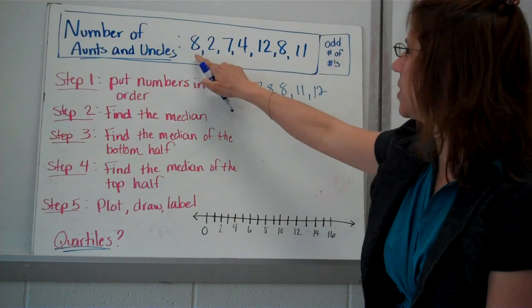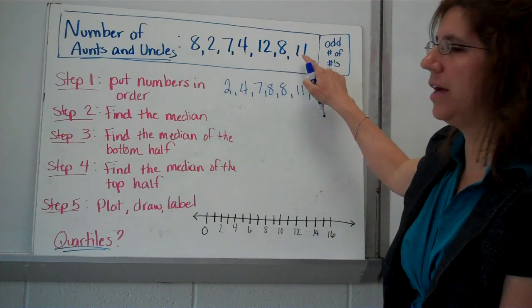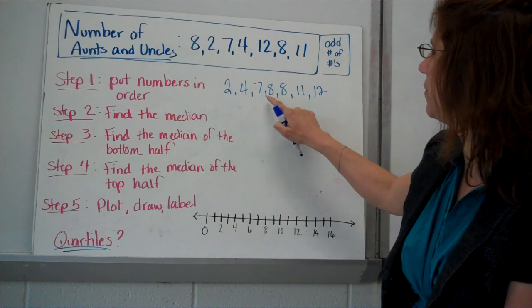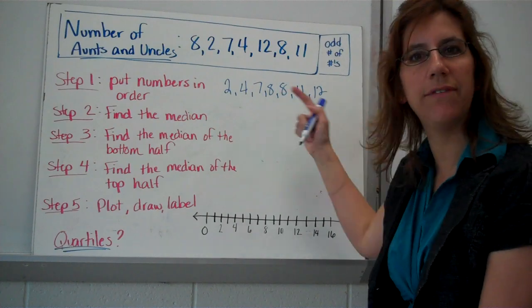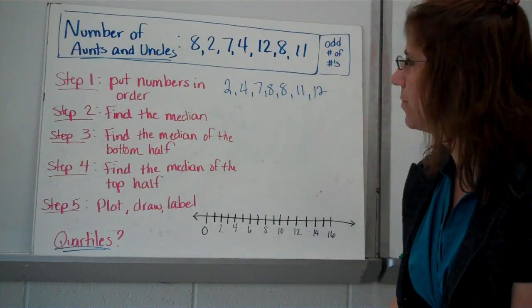And please make sure that you have all the data pieces. Some people like to cross them off as they go. Circle them. I'm just going to count. I've got seven data values up here. So I'm going to count. One, two, three, four, five, six, seven. I've got seven here. So I believe I have them all.